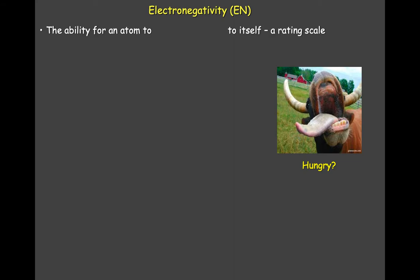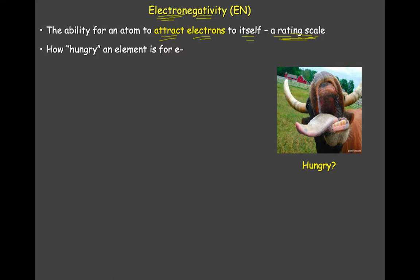I'm abbreviating electronegativity as EN. Simply what electronegativity is — if you look at the name of this particular data point, electron negativity — it's the ability to gain electrons to be negative. What's the ability of this element to gain electrons to become negative? Really, it's the ability of an atom to attract electrons to itself, and we think of it as a rating scale. There's been a number of scientists that tried to calculate a number — we set it up by looking at a lot of data and rating elements on their ability to gain electrons. You can also think about how hungry an element is for electrons.